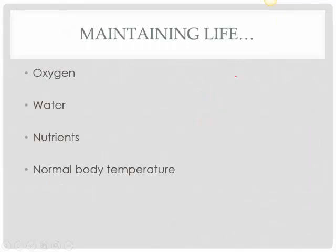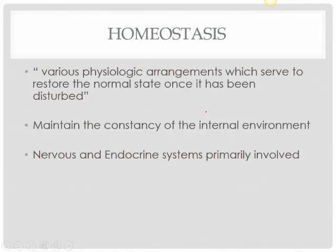Here are some important things needed for maintaining life: oxygen — taken into the body, goes to the tissues, and used to produce energy; water; nutrients; and a normal body temperature. As we go along we'll see how all of these are really important to maintain life. We'll discuss normal body temperature when we discuss homeostasis.